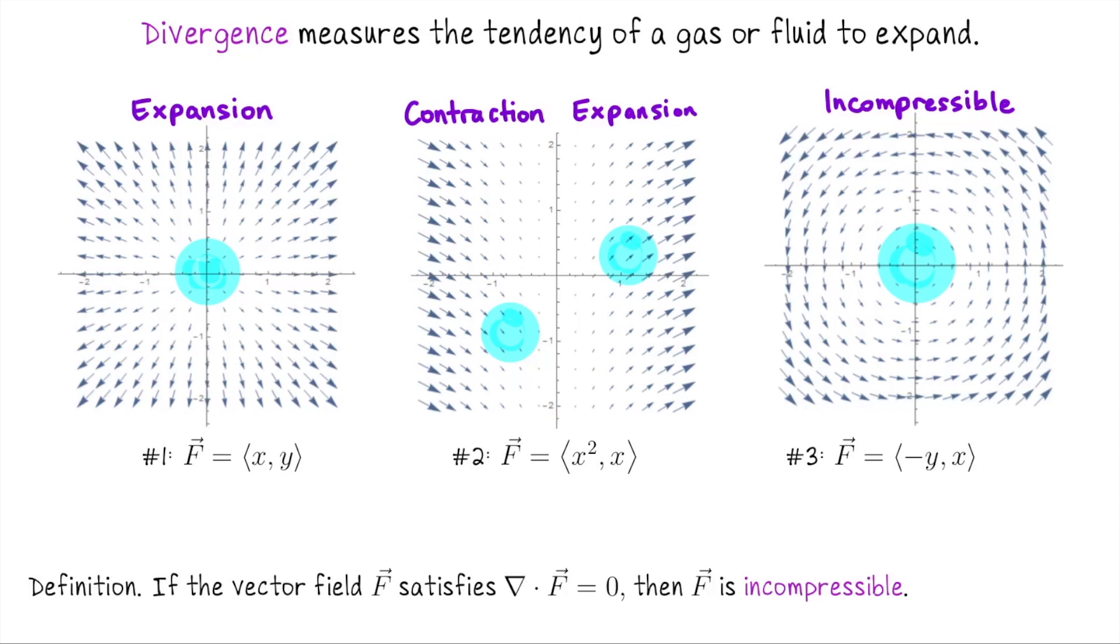Let's see if that agrees with the divergence of these vector fields. For the first one, dP/dx plus dQ/dy is just 1 plus 1, that's 2. That's positive, giving us expansion. For number 2, the divergence is going to be 2x plus 0, that's 2x. When x is negative, it's negative, so we see contraction on the left half of the plane. When x is positive, the divergence is positive, and that's where we're getting expansion. For our third vector field, dP/dx is 0, as is dQ/dy. So the divergence of this vector field is 0, and indeed this vector field is incompressible. So if the divergence is 0, we say the vector field is incompressible. Neither it contracts nor expands.